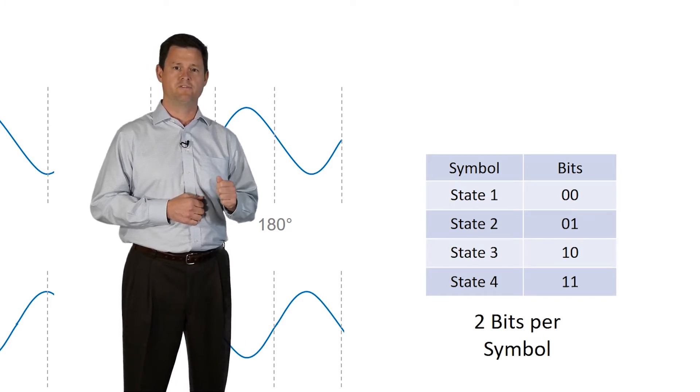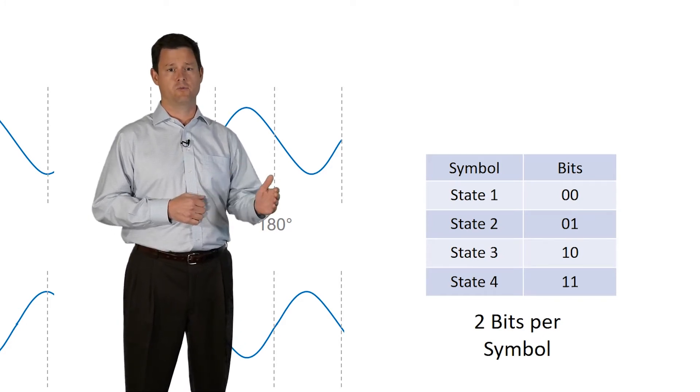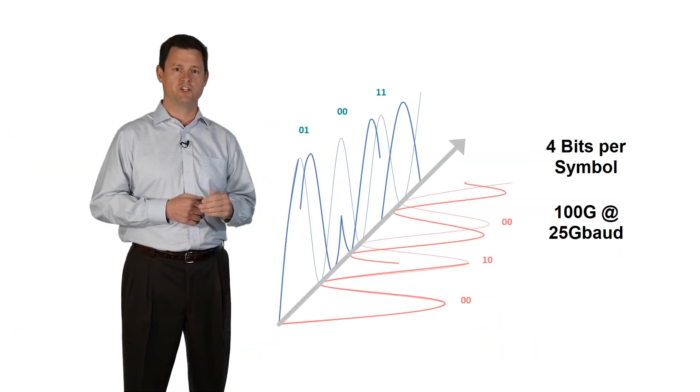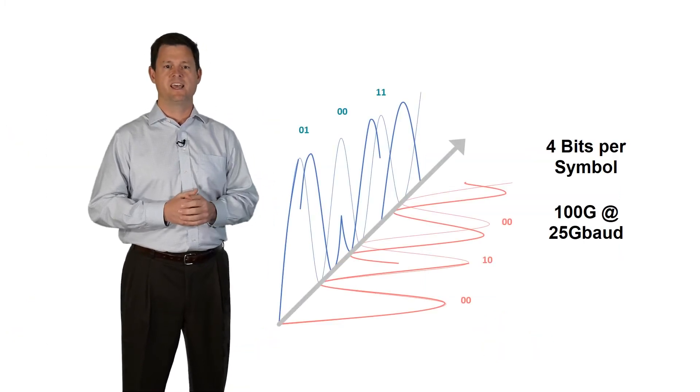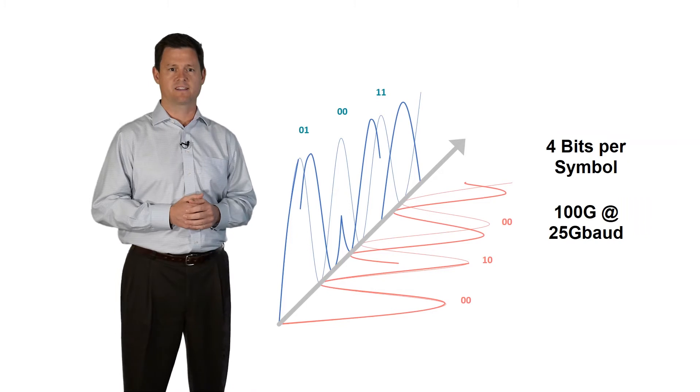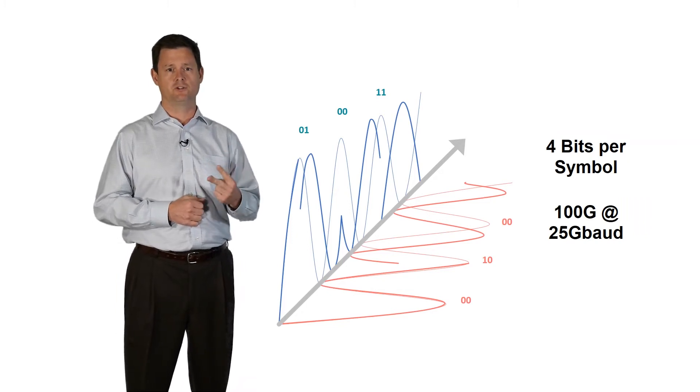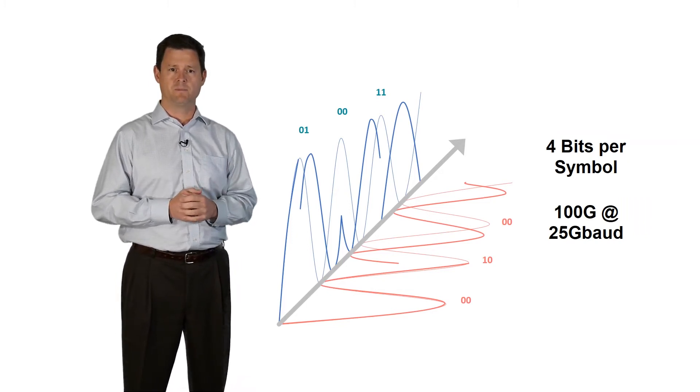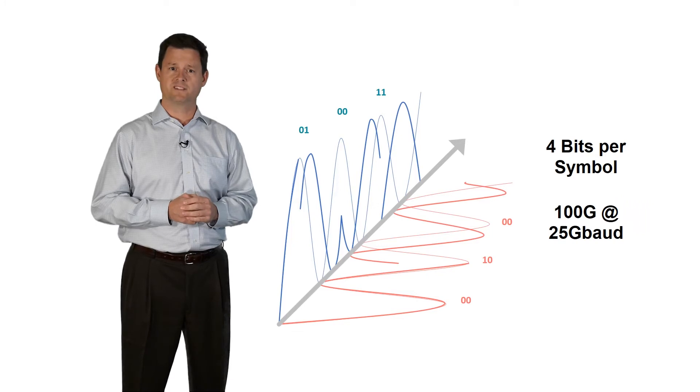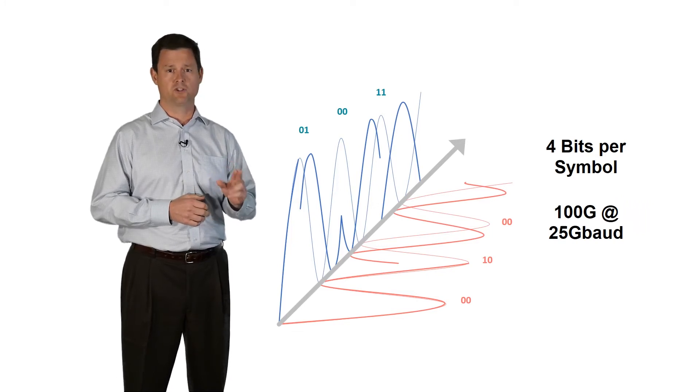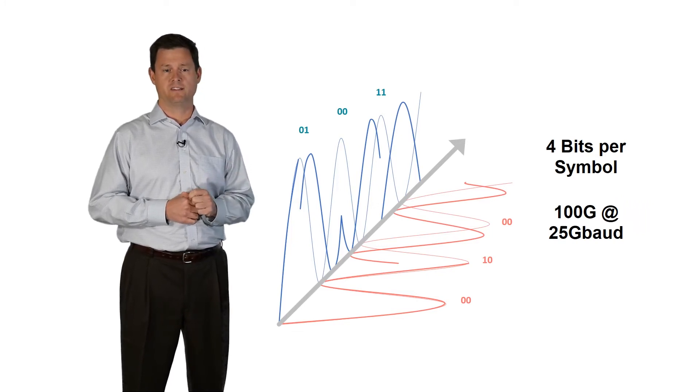We can take quadrature phase shift keying even further with a technique called polarization mode multiplexing. This technique leverages the fact that light is actually comprised of two distinct polarization modes. Most people are probably familiar with this concept if they own a pair of polarized sunglasses. Polarized sunglasses block one of the two polarization modes of light, the glare.